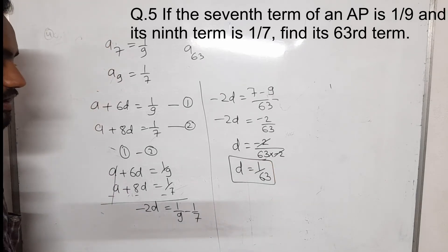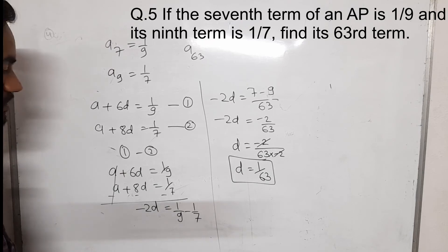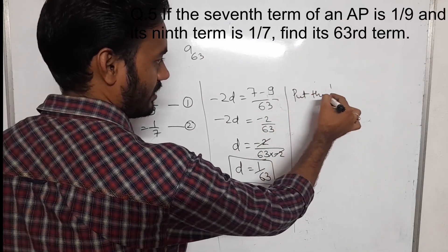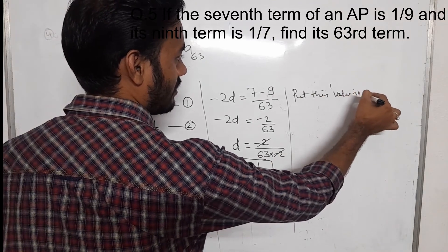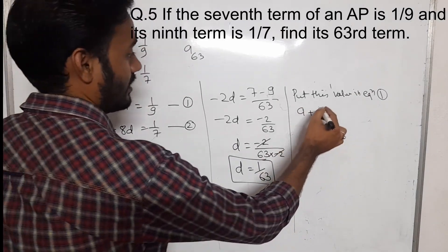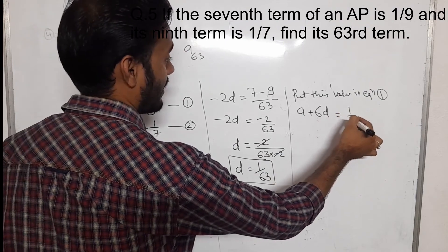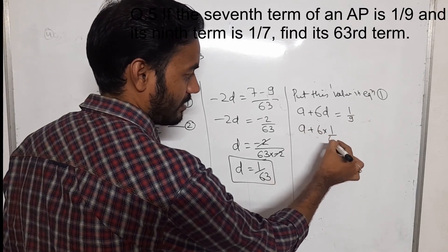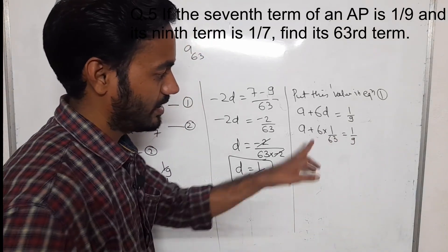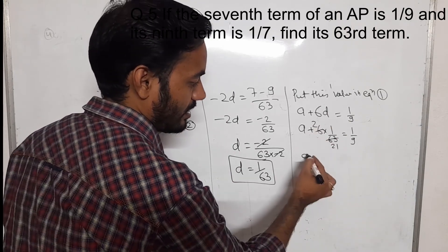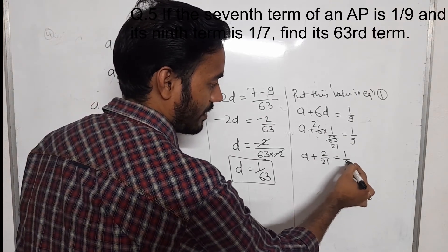First we found the value of D. Now we have to find the value of A, so we put this value into equation number 1. Our equation 1 is A plus 6D equals 1 by 9. So A plus 6 into 1 by 63 equals 1 by 9. Here 6 and 63 get cancelled by 3, giving A plus 2 by 21 equals 1 by 9.